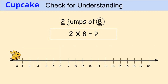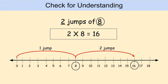Our final contestant is Cupcake. Cupcake is going to show us two jumps of eight, so the multiplication problem is two times eight equals blank. Pause the video, create the number line to help you find the product of two times eight. Unpause the video when you're ready to check your answer, judges. If you said two times eight equals sixteen and your number line looks like mine, then you are correct.